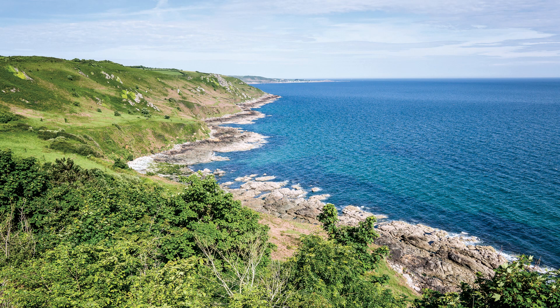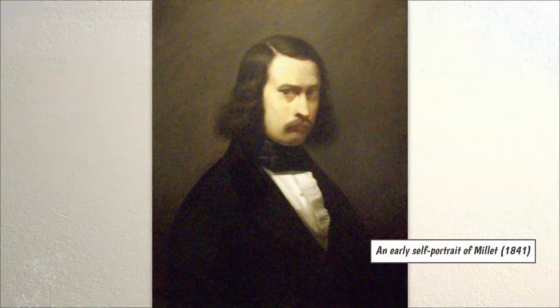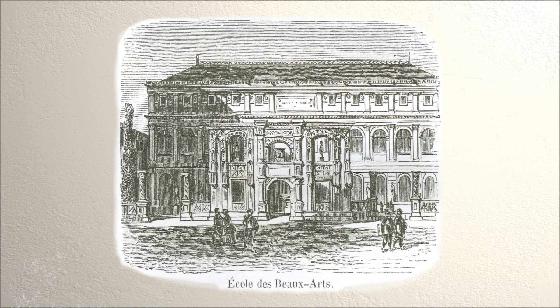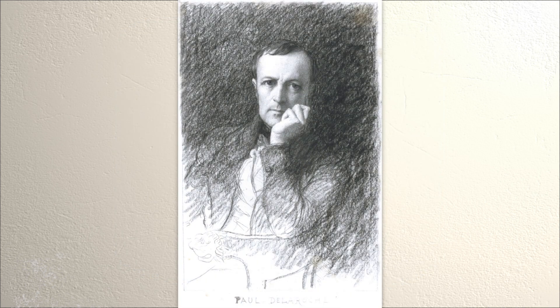At 18, Millet moved to Cherbourg to study art. In Cherbourg, he learned from some well-known portrait painters. Four years later, Millet moved to Paris. In Paris, he studied at the famous School of Fine Arts for two years. His teacher there was a well-known artist, Paul Delaroche.